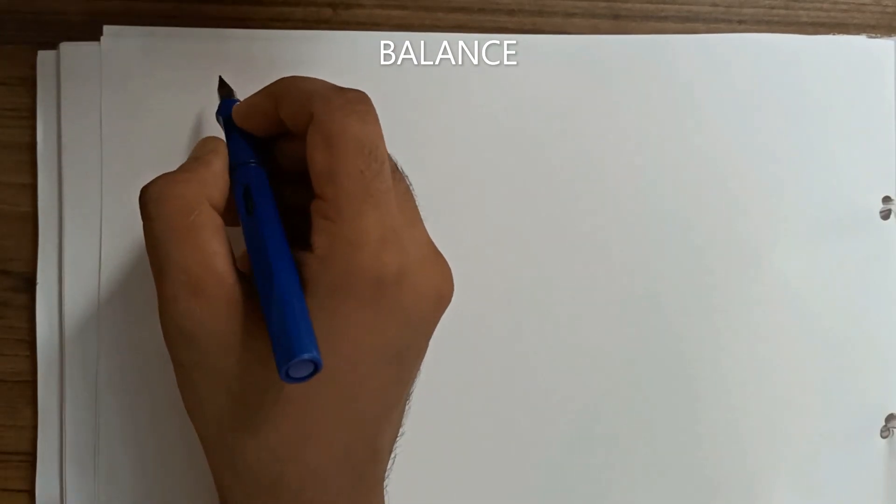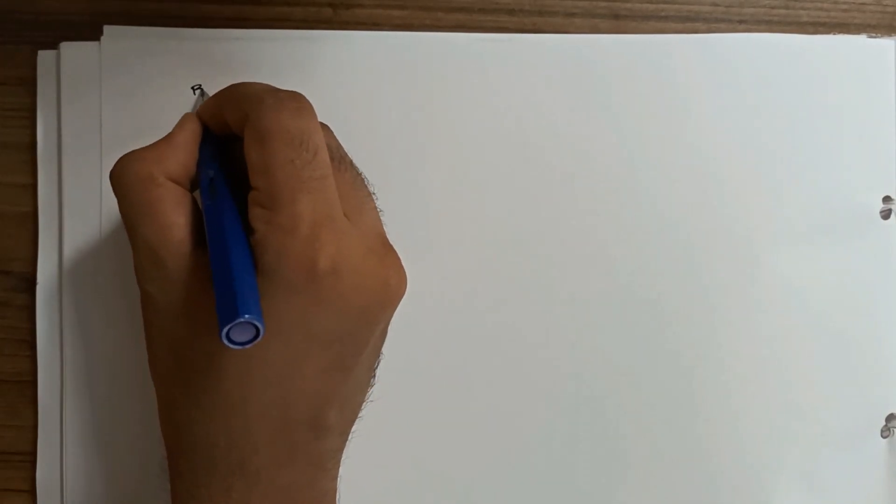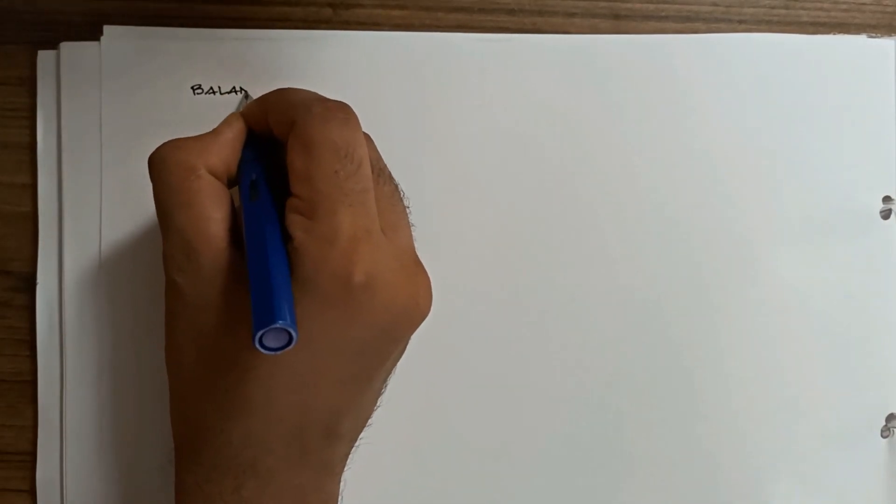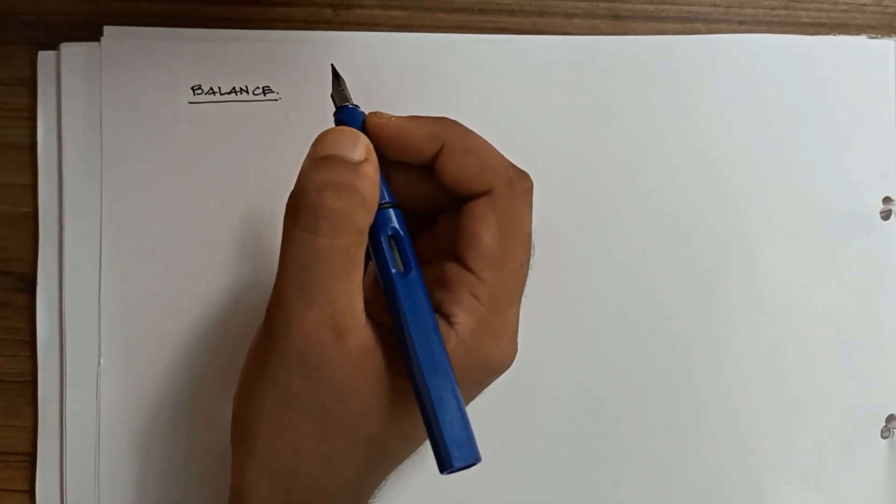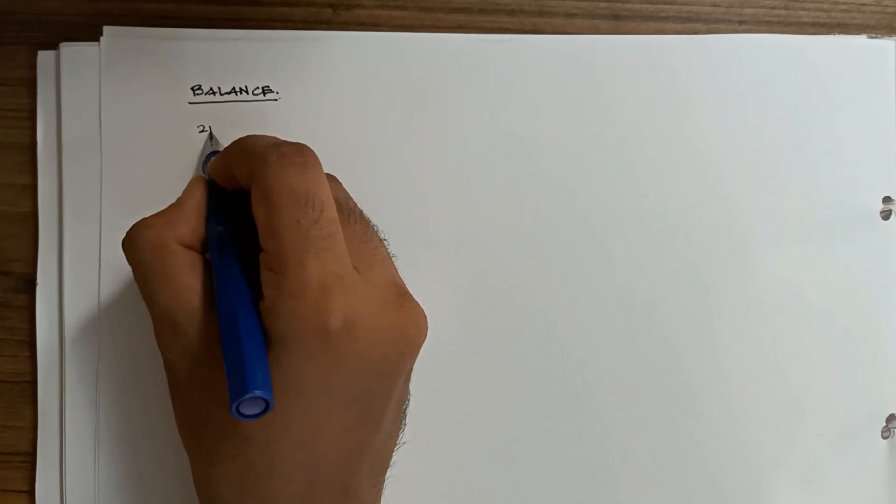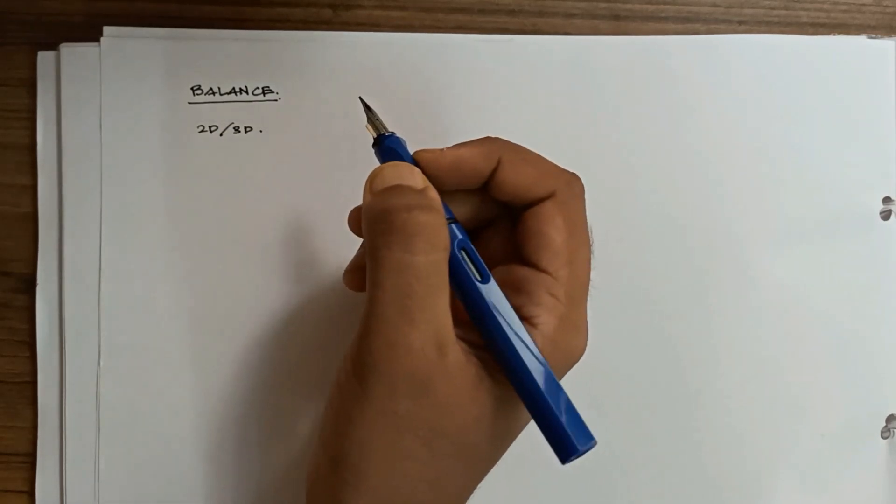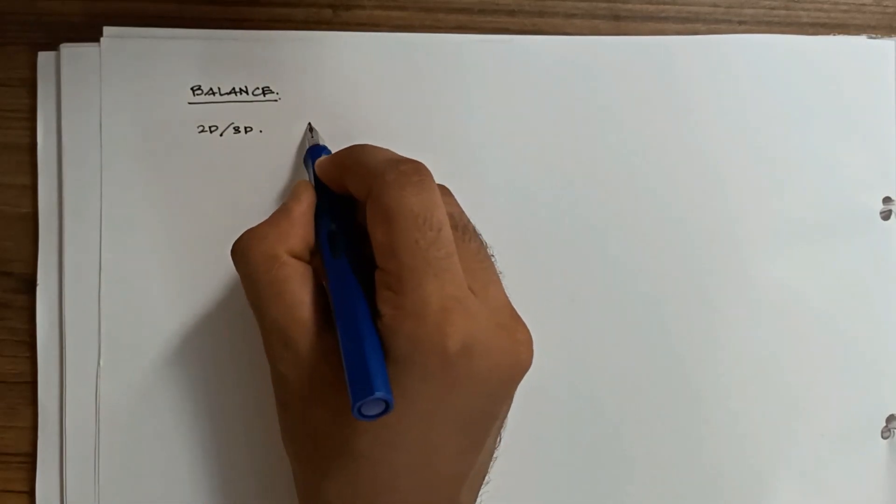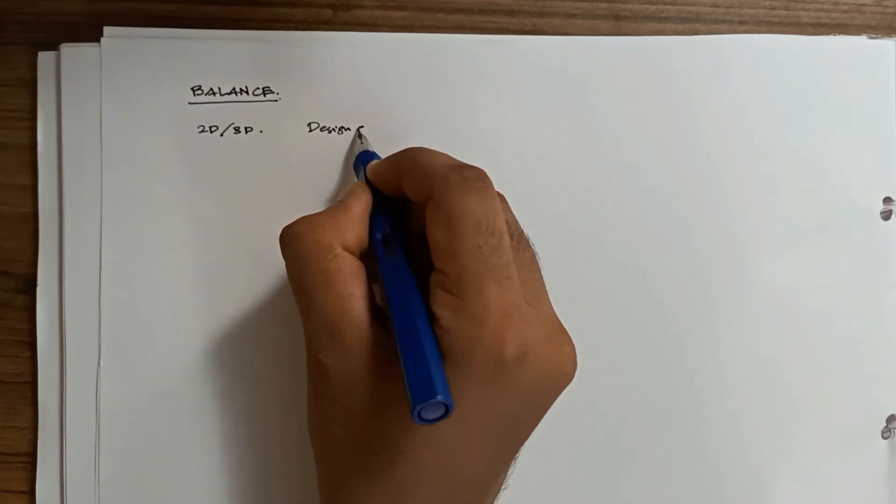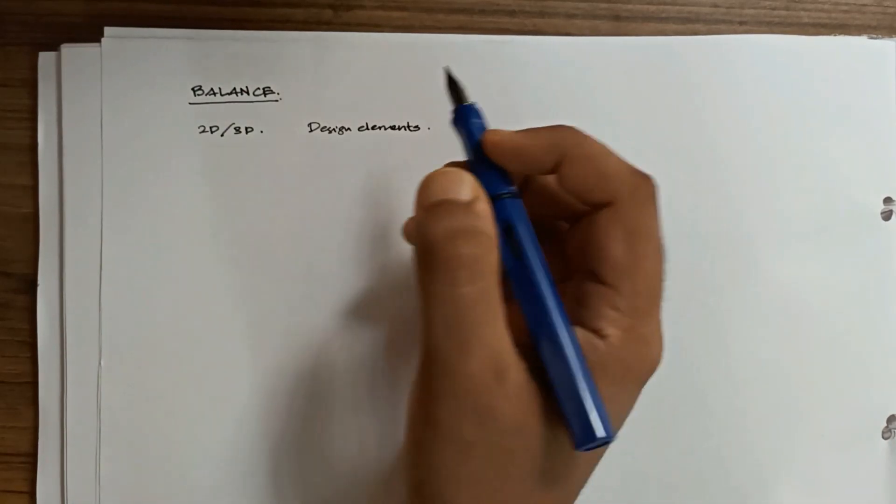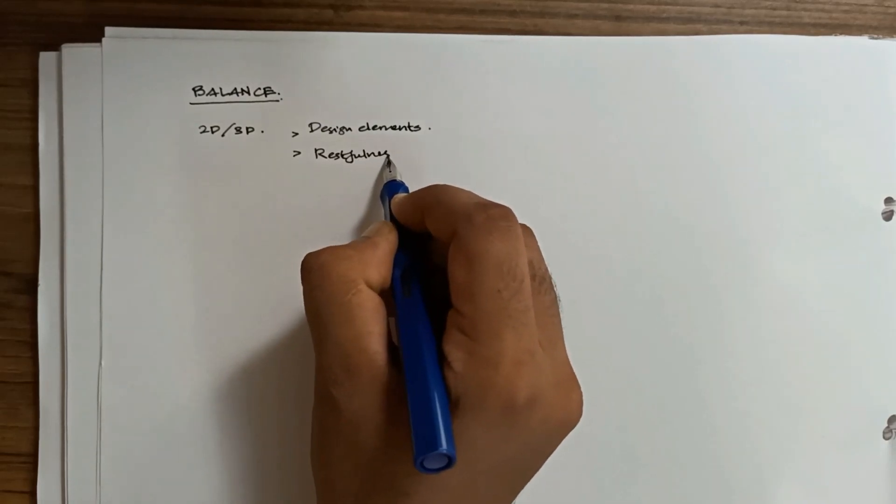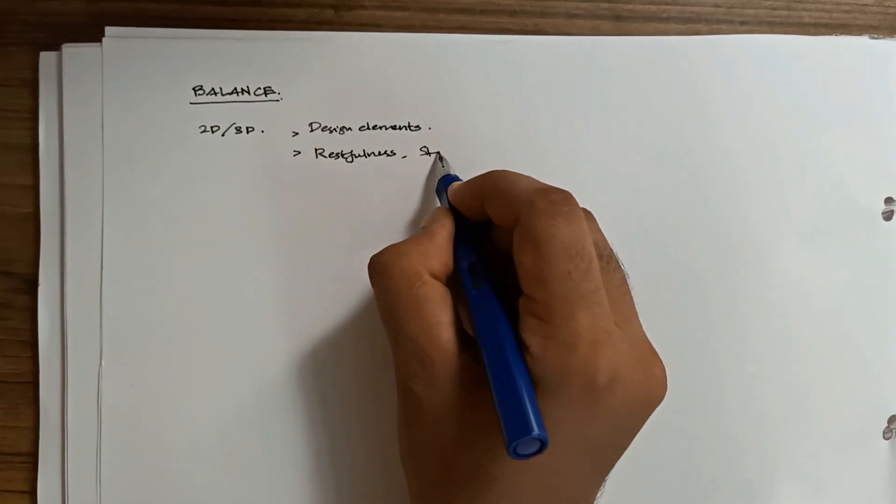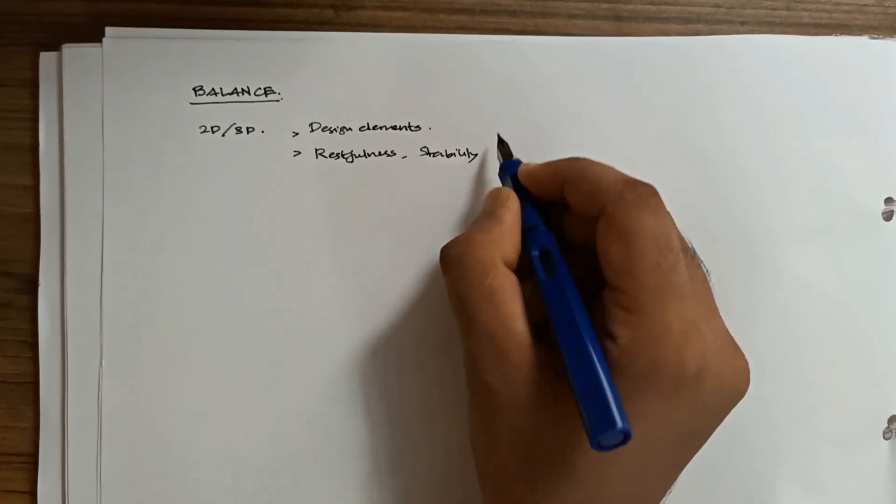Let's discuss balance. Balance in any composition, either a 2D or a 3D composition, is the arrangement of design elements in such a way that it brings a sense of restfulness, stability or equilibrium.